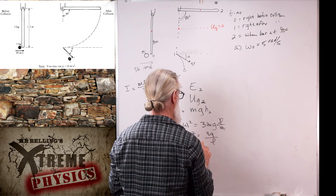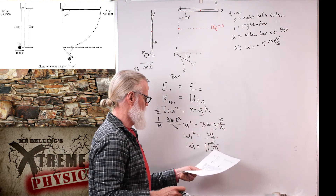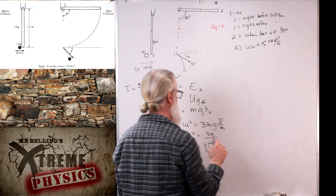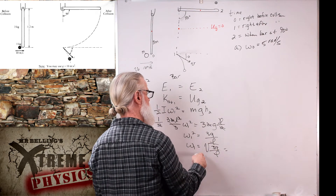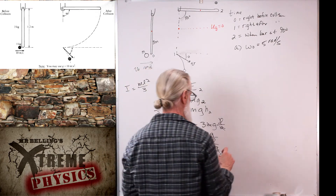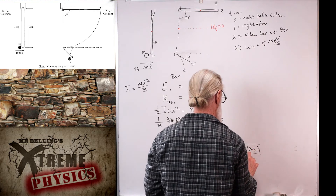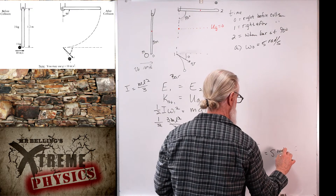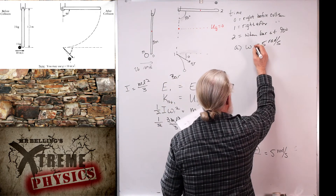Let's check units: we have meters per second squared divided by meters, giving per second squared, and taking the square root gives per second — radians are implied, so units work out. Plugging in numbers with G = 10 m/s² and L = 1.2 m: ω₁ = √(3 × 10 / 1.2) = 5 radians per second.